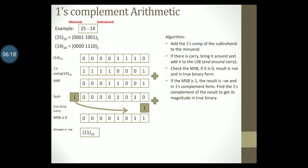Converting this binary number to decimal, we get the answer as 11. Let us confirm that this is correct. We are subtracting 25 minus 14. The first number is bigger than the second, so we expect a positive answer. And 25 minus 14 is indeed 11 in decimal, which matches the result obtained using 1's complement arithmetic.